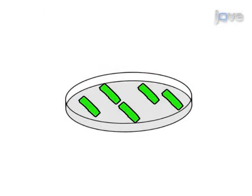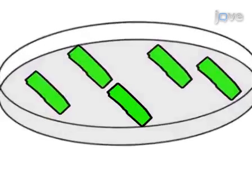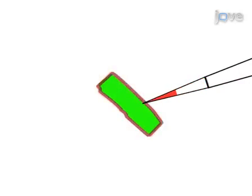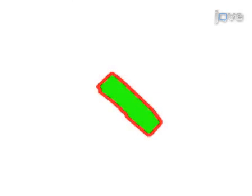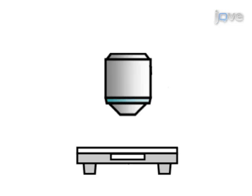The cells are loaded with a fluorescent calcium indicator. Then the cells are microinjected with a drug or other protein of interest. The final step is to carry out rapid fluorescence imaging on a confocal microscope.